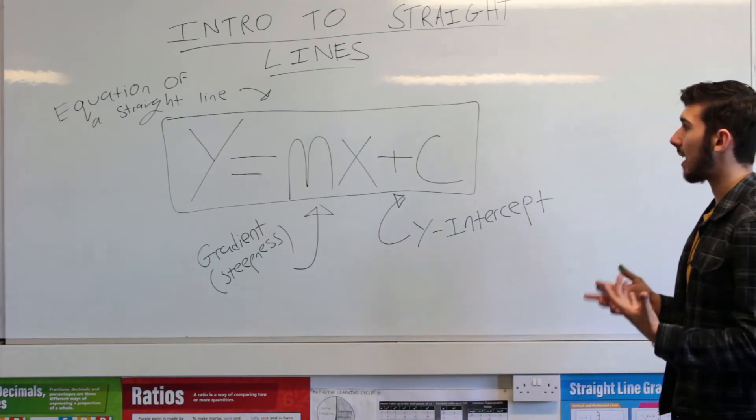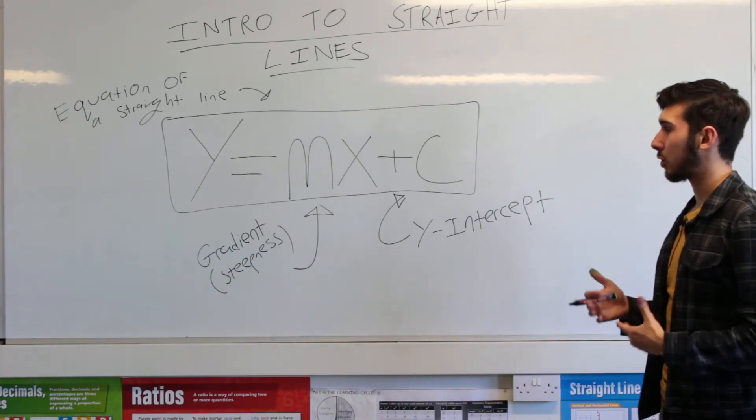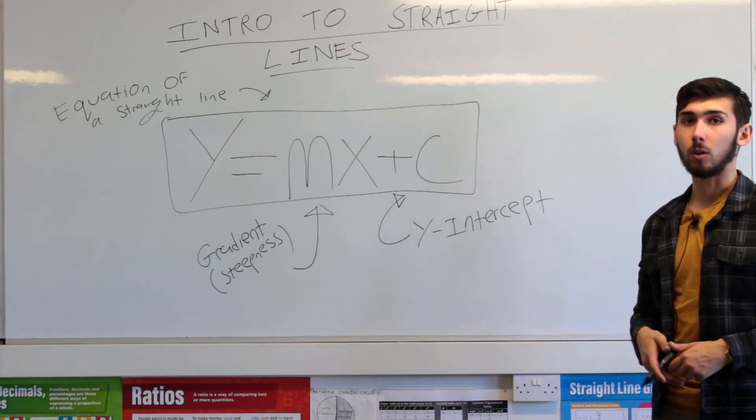And y and x, obviously, those are always in the equation. X is the x-coordinate of a point on the line. Y is the y-coordinate of a point on the line.